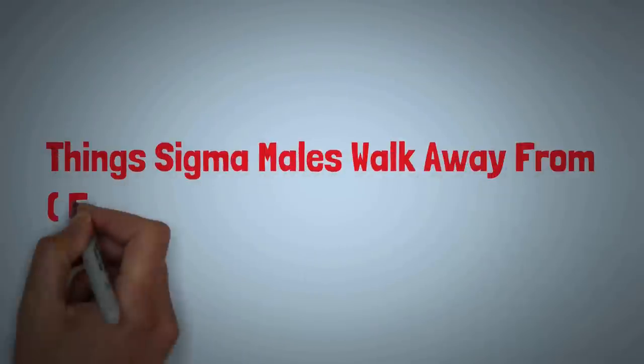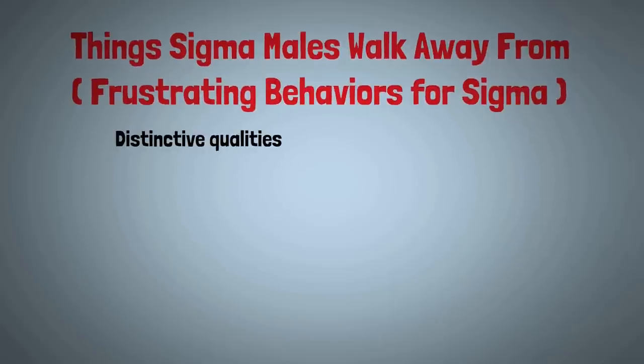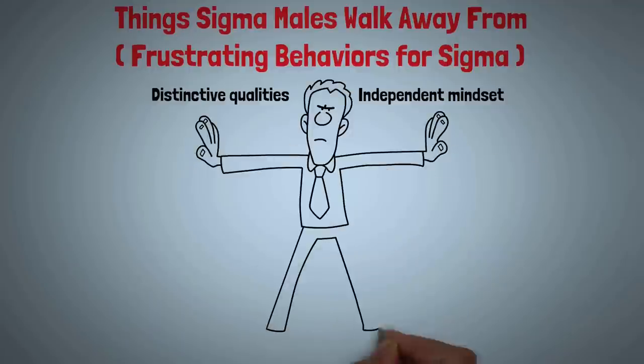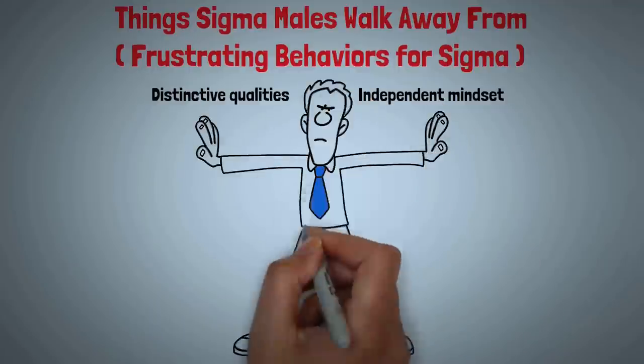Things Sigma Males Walk Away From: Frustrating Behaviors for Sigma. With their distinctive qualities and independent mindset, Sigma males often walk away from frustrating behaviors that hinder their personal growth and fulfillment.